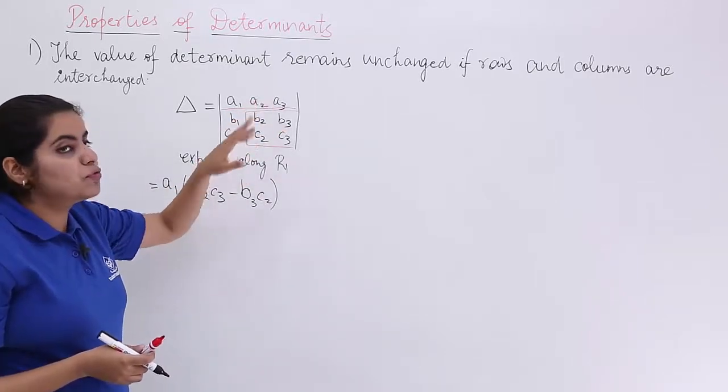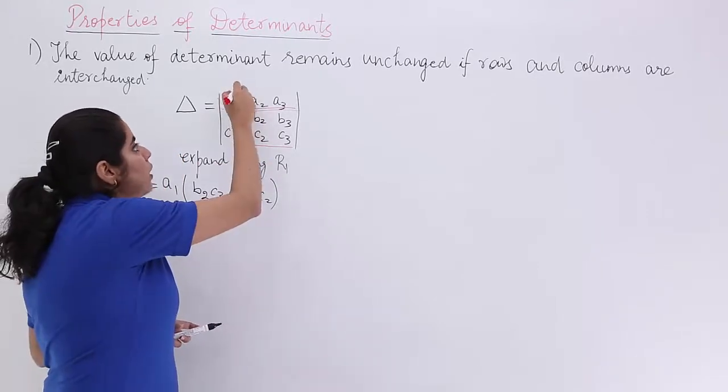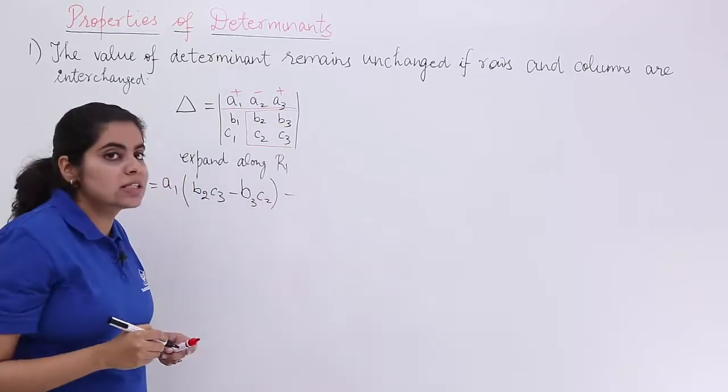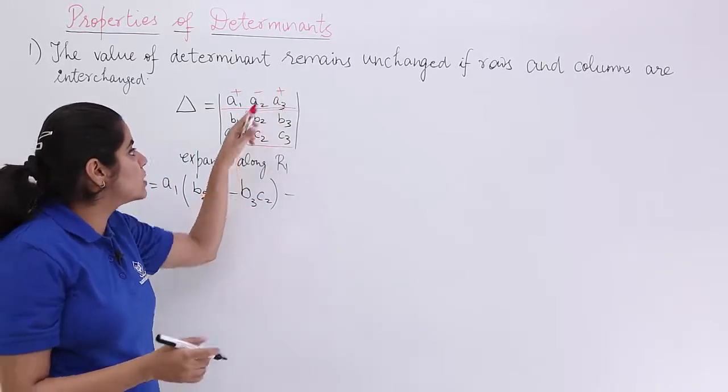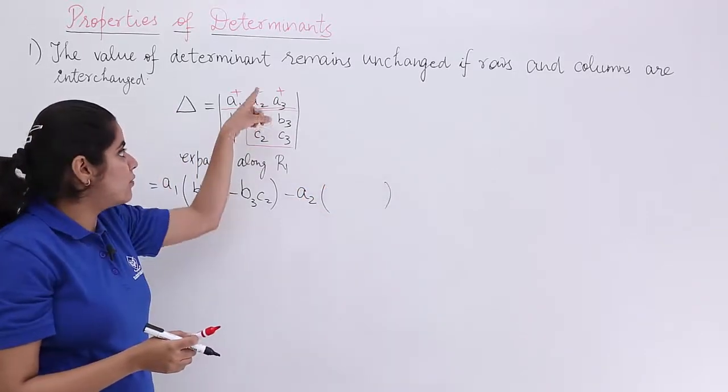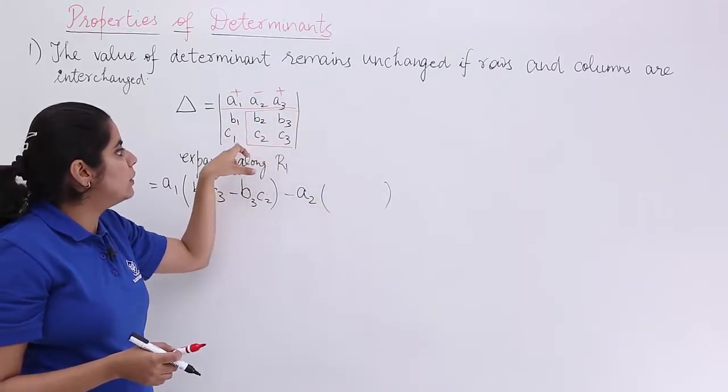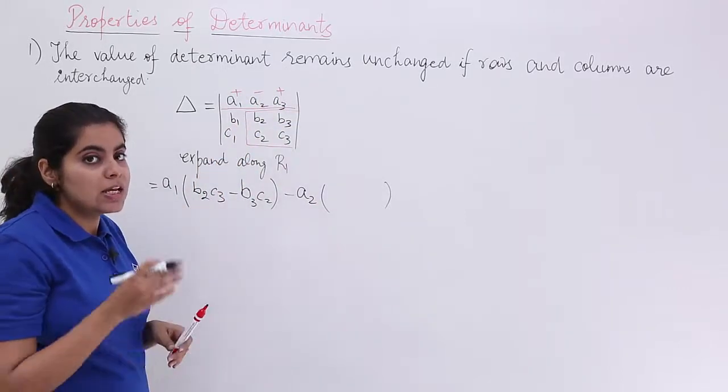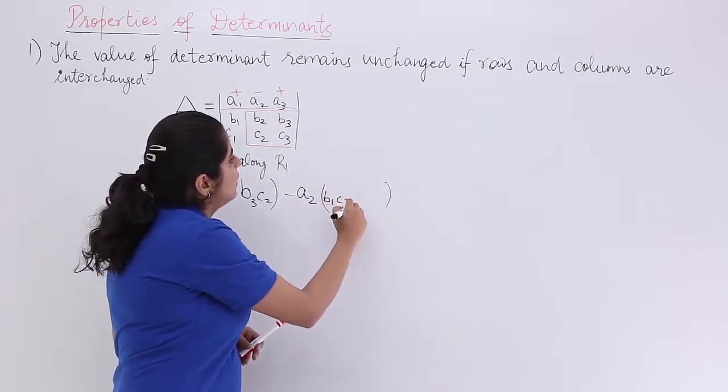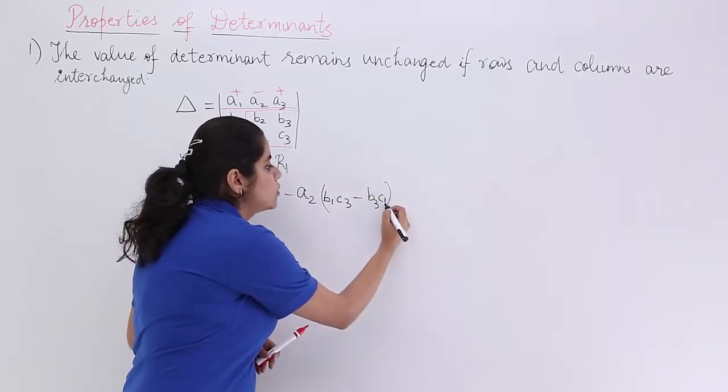Now, you again move to the second element which is a2. Since it is the second element and we go in the order as plus, minus, plus, we have this as minus. a2 is here and you have ignored the second column, first row. So, you have b1, b3, c1, c3. b1, b3, c1, c3 cross-multiplication should be there. It is b1c3 minus b3c1. This is how we are going about it.